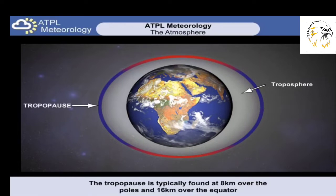The thickness of the troposphere, and therefore the height of the tropopause, is not constant across the Earth. Over the poles, the height of the tropopause is about 8 km, whereas over the equator it's about 16 km. The average height is 11 km, which is found at about 45 degrees latitude.